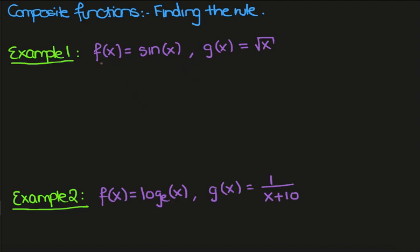So let's look at this first example where we have f of x is equal to sine x and g of x is equal to the square root of x. And let's say we want to find the rule for f of g of x. So here what this means is that the input of f is the output of g.